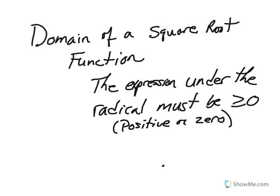When looking at the graphs of square root functions, we must analyze the domain of the function, or in other words, the values that x is allowed to take on. The expression under the radical must be greater than or equal to zero. In other words, it needs to be positive or zero.